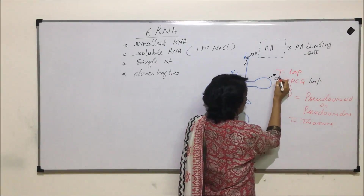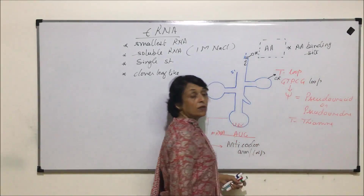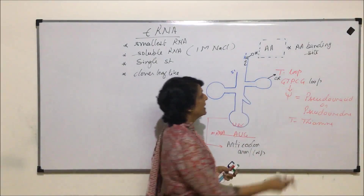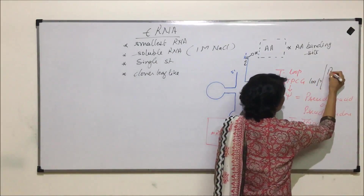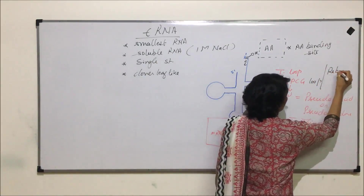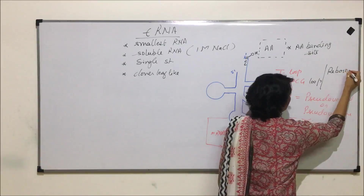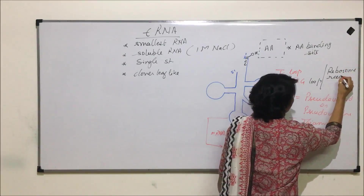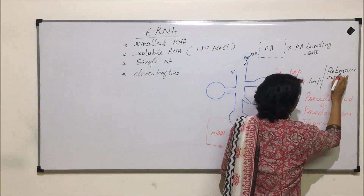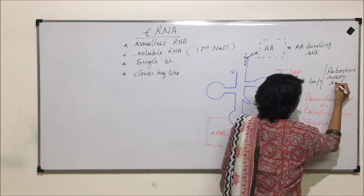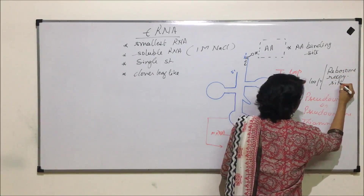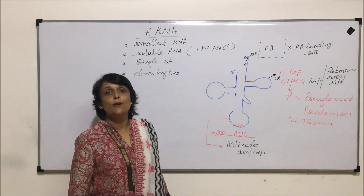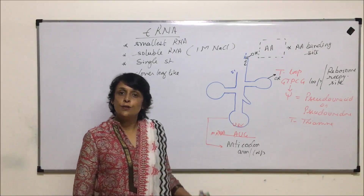The function of the T-loop is ribosome recognition. That is why it is known as the ribosome recognition site.